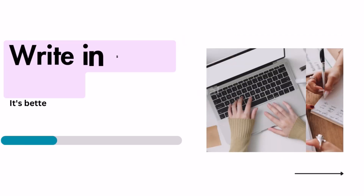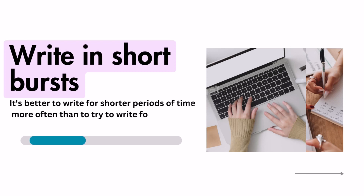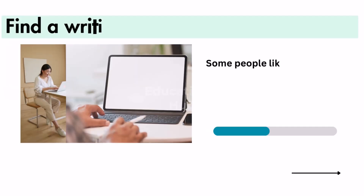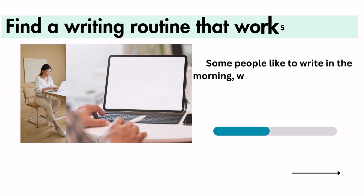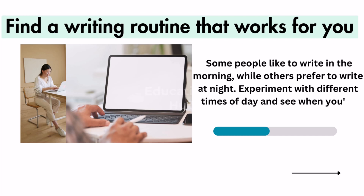Tip 7: Write in short bursts. It's better to write for shorter periods of time more often than to try to write for long periods of time all at once. Tip 8: Find a writing routine that works for you. Some people like to write in the morning, while others prefer to write at night. Experiment with different times of day and see when you're most productive.